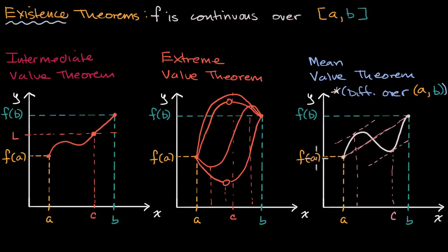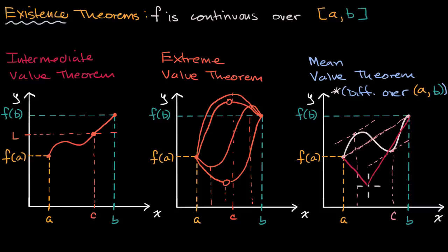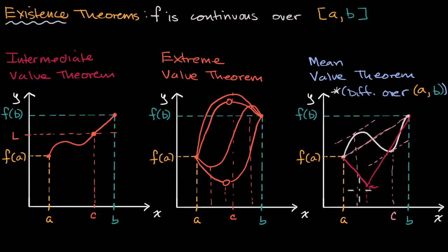For example, here's a counterexample: something like an absolute value function, where the function is linear up to a point and then linear again — we're not going to be differentiable at the corner, so the derivative isn't defined there. Now, at no point over this interval is the slope of the tangent line the same as the average rate of change. You might try to argue that maybe right at the corner — but we're not differentiable there. There isn't a well-defined tangent line or a well-defined derivative.